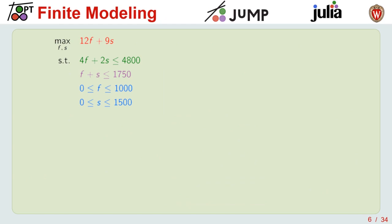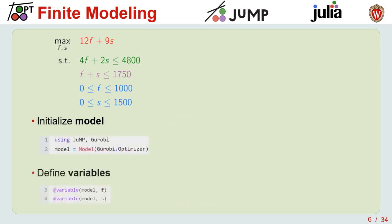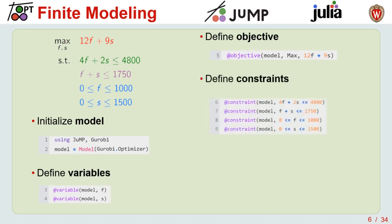These types of models can be readily tackled using JuMP by establishing a model, defining the variables we need, adding the objective, defining the constraints, and then solving it with our solver of choice — all in a convenient syntax, which is why we like using JuMP.